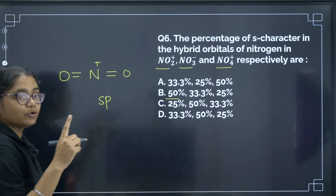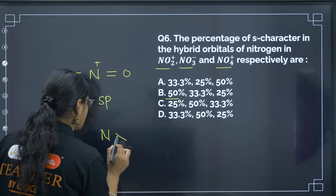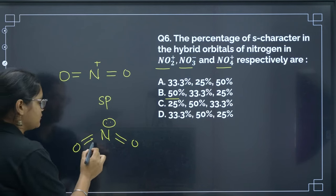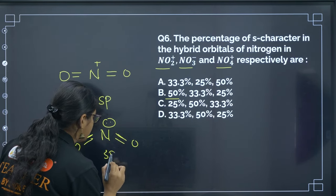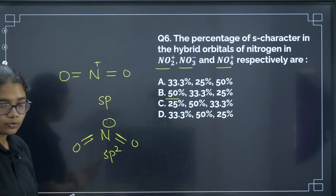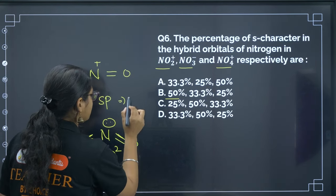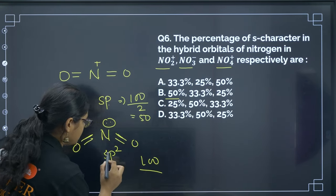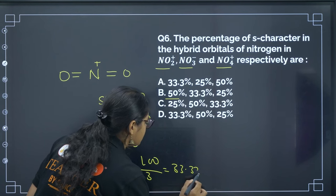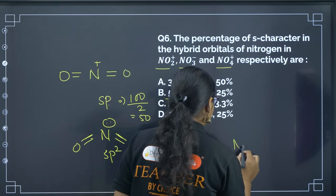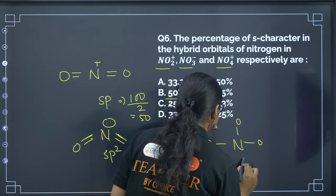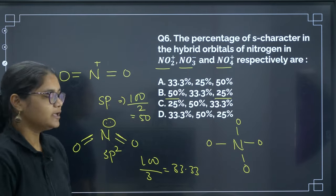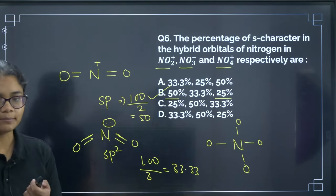For NO3⁻, nitrogen has 6 valence electrons (5 + 1 for the − charge), giving 2 bonds plus 1 lone pair — hybridization is SP2. S character = 100/3 = 33.33%. For NO4⁺, hybridization is SP3. S character = 100/4 = 25%. So the percentage S characters are 50%, 33.33%, and 25% respectively. The correct answer is option B.